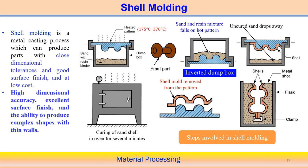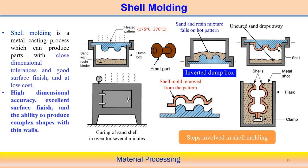One important aspect associated with casting is shell molding. Shell means we can create a very thin yet hard or tough shell, strong enough to sustain the liquid molten metal. We can create the shell mold very effectively and precisely — it can be considered a casting process which produces parts with close dimensional tolerances, meaning very good dimensional accuracy.